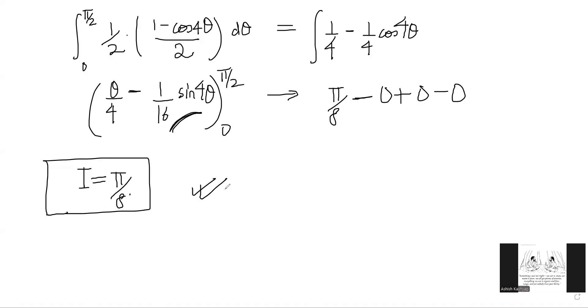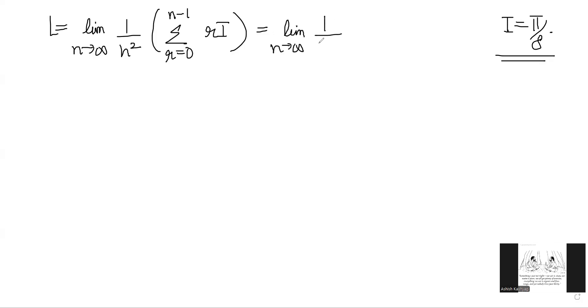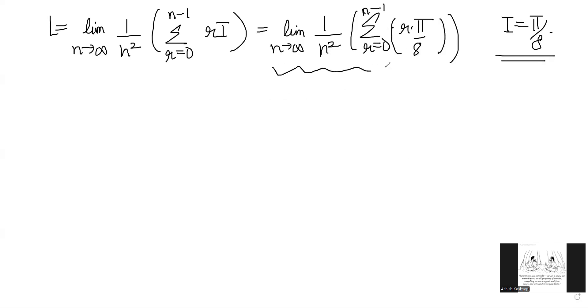That is the first part of the question — the value of i is π/8. We still have the second part about the limit L. We know i = π/8, and L was defined as the limit as n tends to infinity of (1/n²) times the summation of r from 0 to n − 1 of r · i. This equals limit n → ∞ of (1/n²) times the summation of r · (π/8). This should remind you of the definite integral as the limit of a sum.